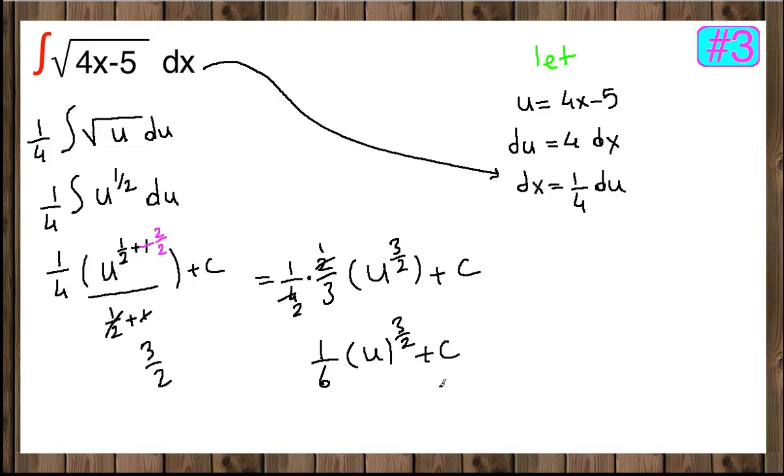And if we bring u back, 1 sixth u was 4x minus 5 to the 3 over 2 plus c. This is the final answer. You can leave either in this form or you can write a little bit more compact.